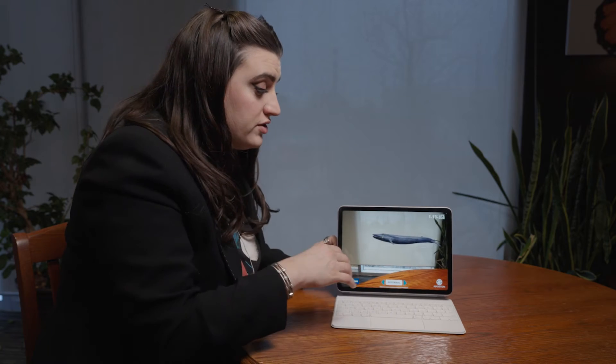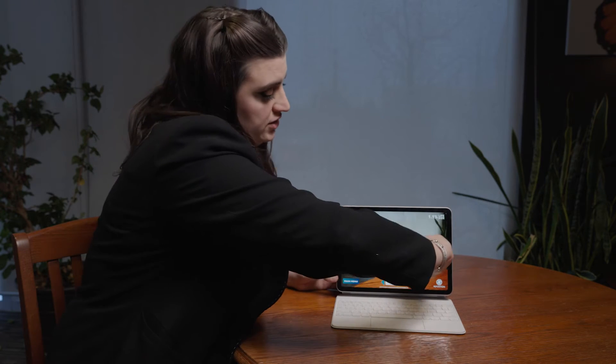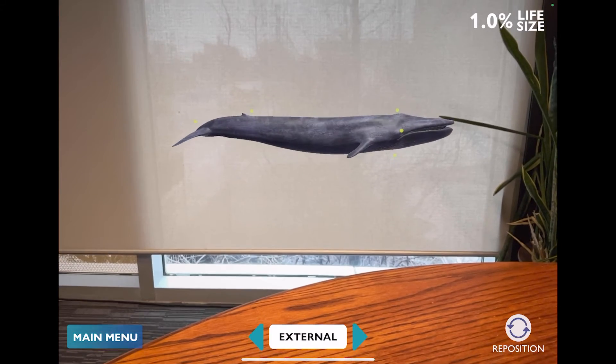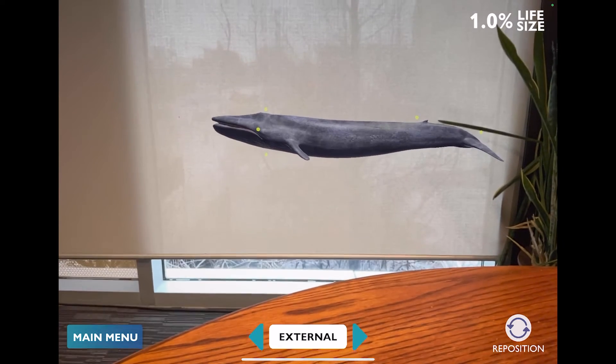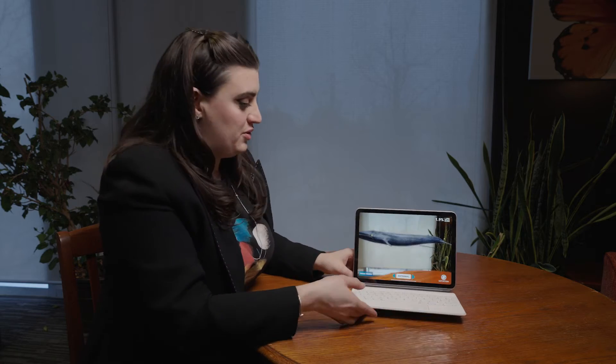And if you also want to see different angles of the whale, just simply turn your fingers in a clockwise or counterclockwise motion. Once you have the Blue Whale in a position you'd like, you can move your tablet or phone around to see different angles of the Blue Whale.